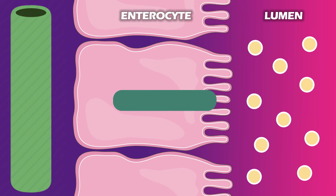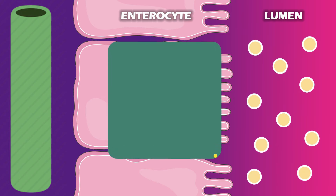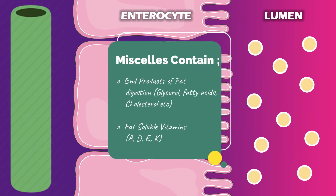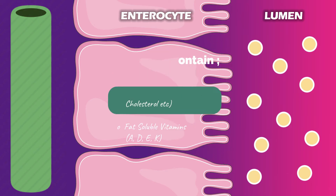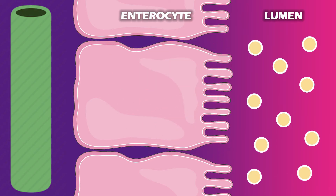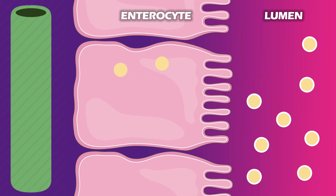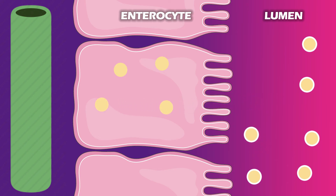The micelles contain the end products of fat digestion and the fat-soluble vitamins A, D, E, and K. As soon as the micelles reach the apical surface of the enterocytes, these products are readily absorbed by the enterocytes without the need for any kind of transporters, as they are lipophilic and can easily cross the cell membrane.